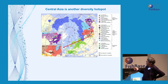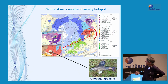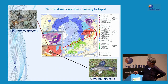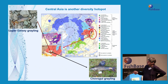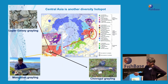Another hotspot of diversity is in Central Asia, around Mongolia and the Altai mountain river systems. Here you have the endemic Kovsgol grayling found in one small lake — Kovsgol Lake — in the upper Selenga river in Mongolia. You have the upper Yenisei grayling, which I was involved in describing, with a very restricted distribution in the upper Yenisei river in Mongolia and a small part of Russia. And we have the very large-bodied Mongolian grayling, by far the largest species of grayling.